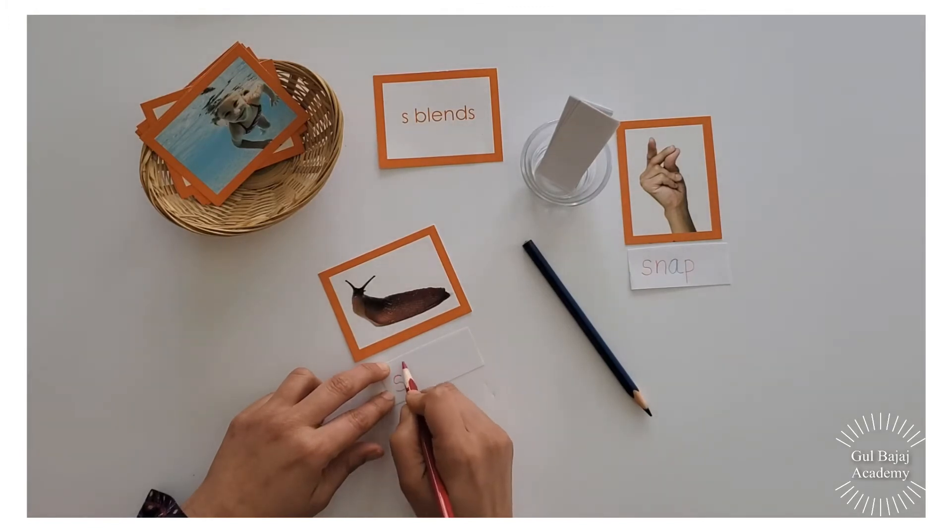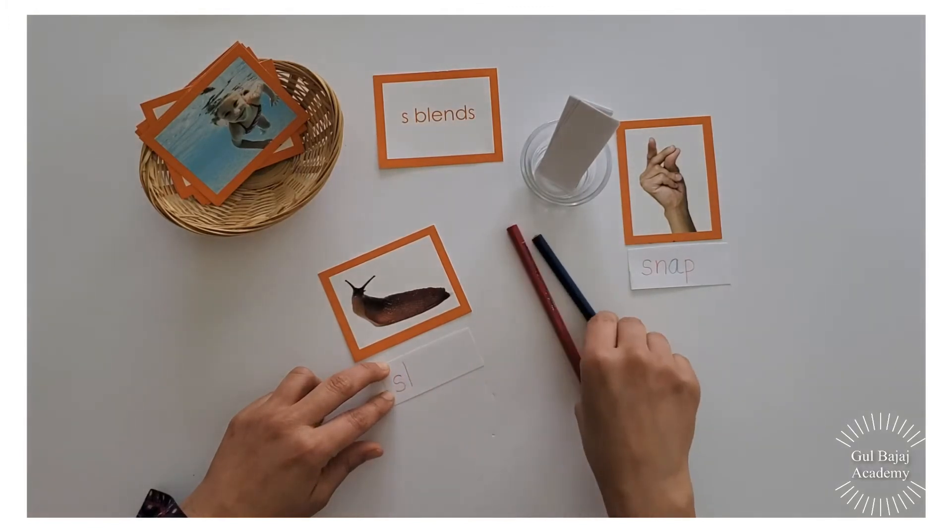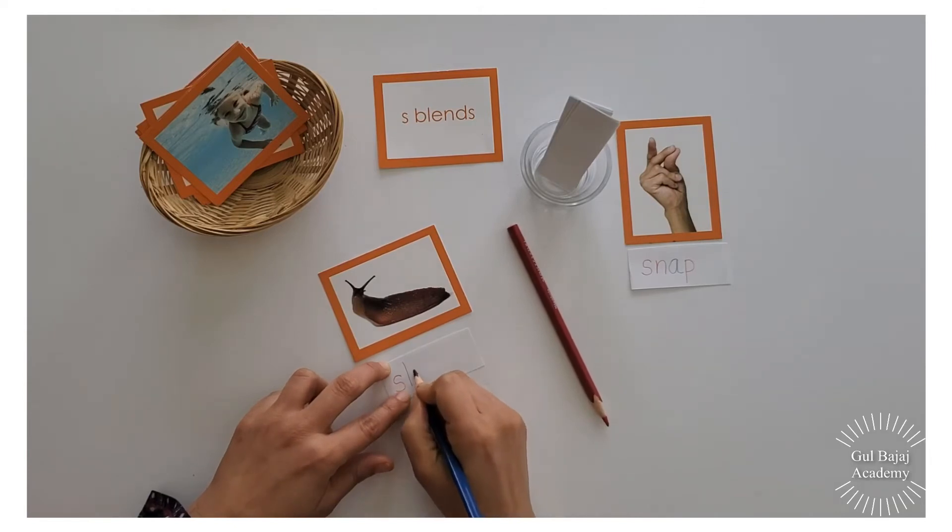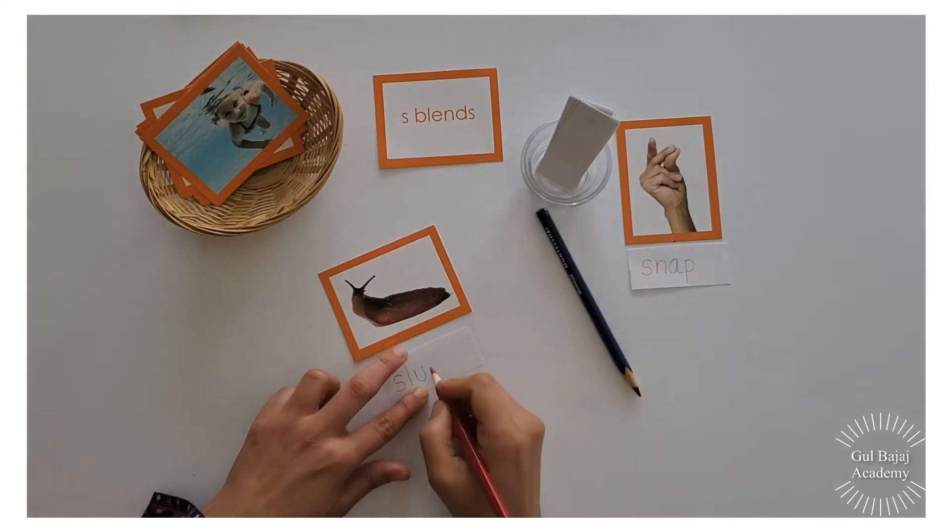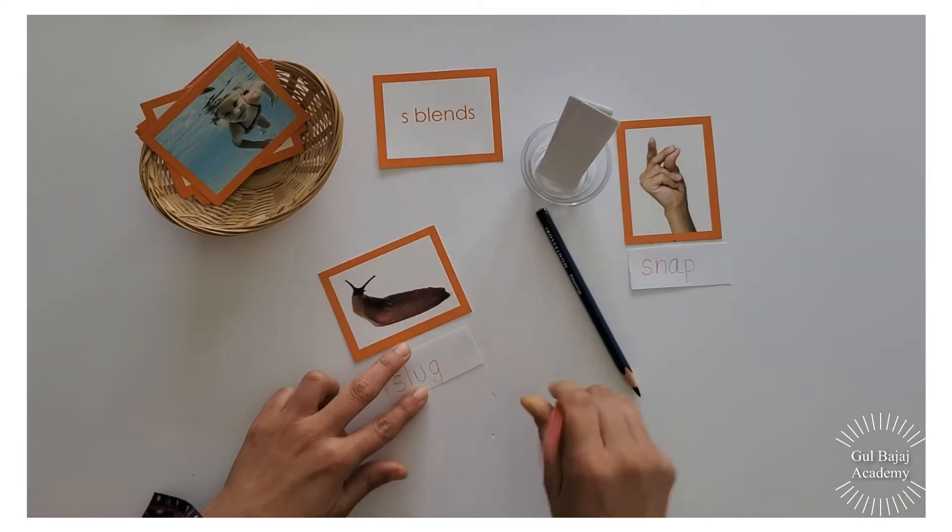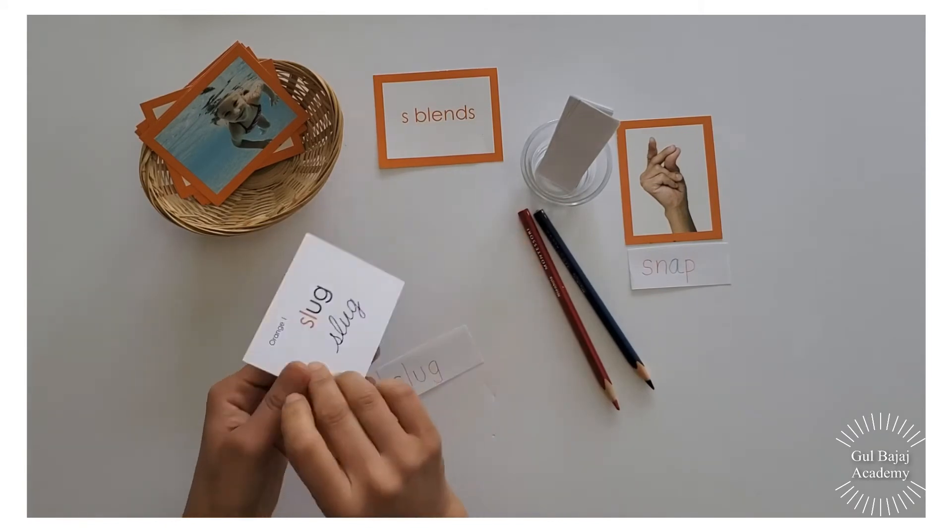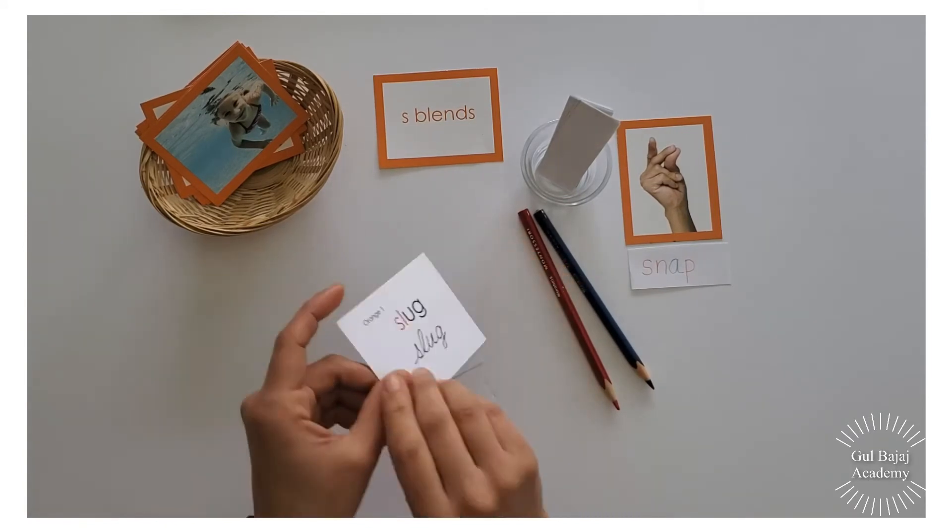S, l, my vowel is u and my ending sound is g. Slug. Slug. Let's check. Beautiful. Good job.